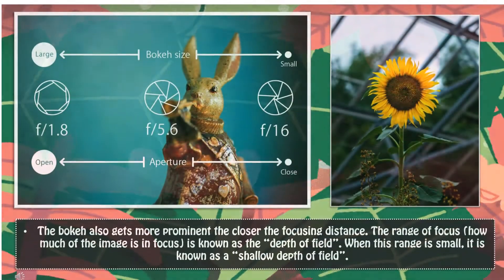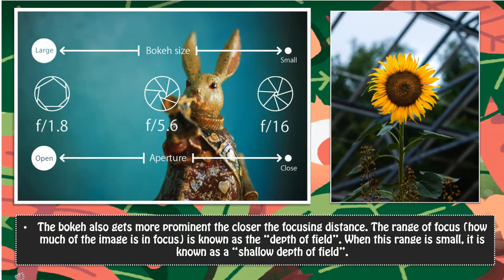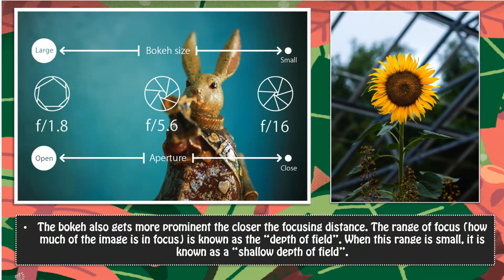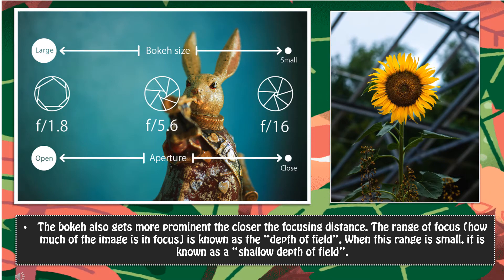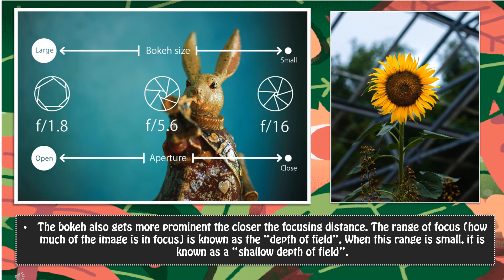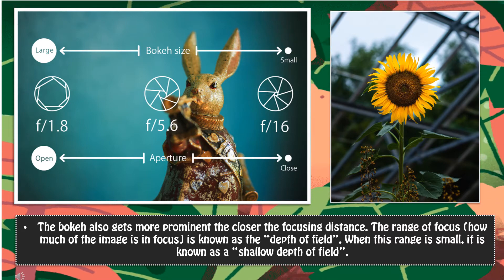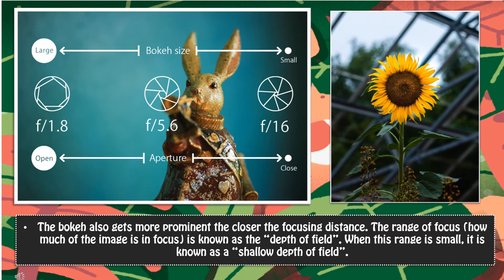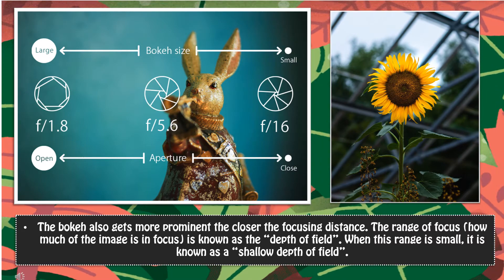The bokeh also gets more prominent the closer the focusing distance. The range of focus — how much of the image is in focus — is known as the depth of field. When this range is small, it is known as shallow depth of field.